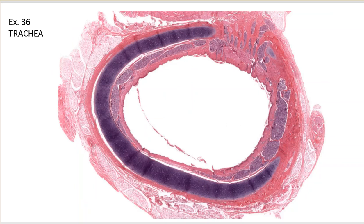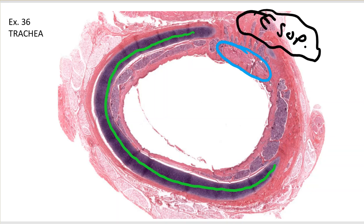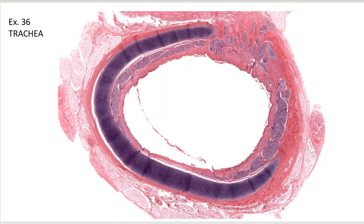Now let's look at that histologically. This is the same picture from histologyguide.com — you can go there and zoom in if you want. Here we have the C-ring of hyaline cartilage, then the smooth muscle next to where your esophagus would sit. We can see our epithelium on the inside, then the lamina propria in the yellow area, then the seromucous glands circled in blue, then the cartilage, and finally the adventitia on the outside.